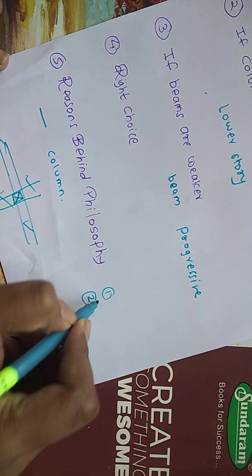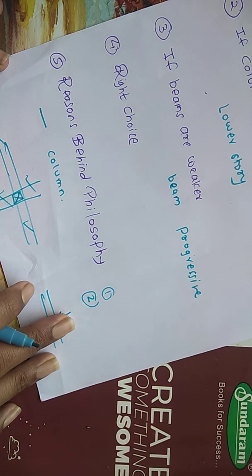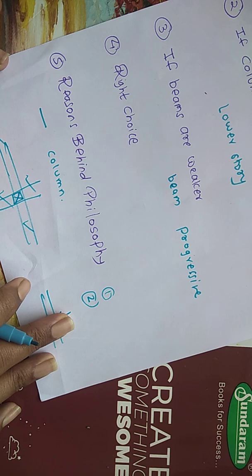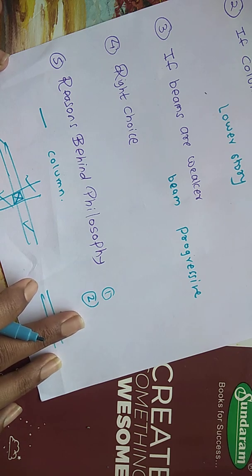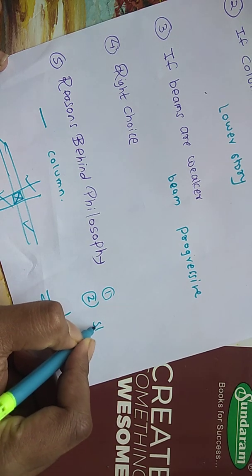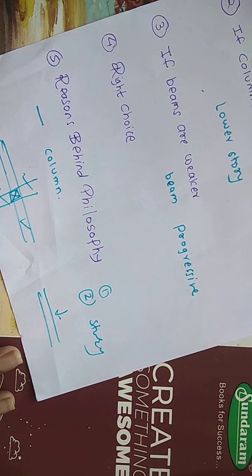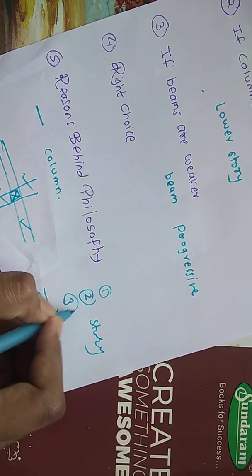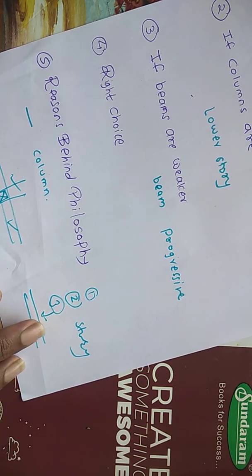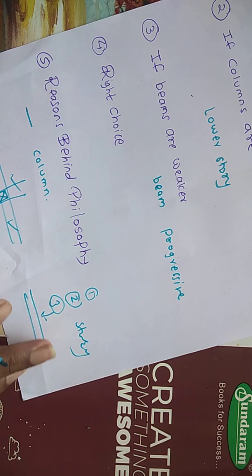The second reason is in a weak column structure, plastic deformation is concentrated in a particular story only, and a relatively large ductility factor is required.